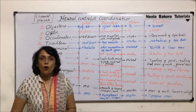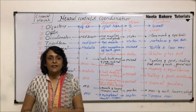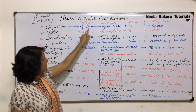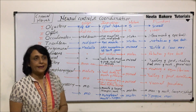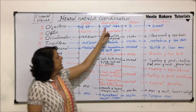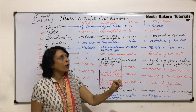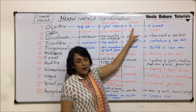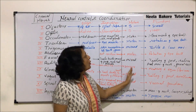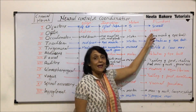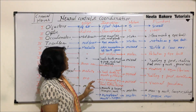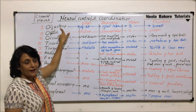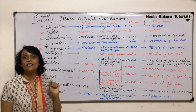Let us now study all 12 cranial nerves on the following points: the origin, from where they arise; innervation, means where are they going or supplying to; the nature, which we have already discussed; and then the main functions.